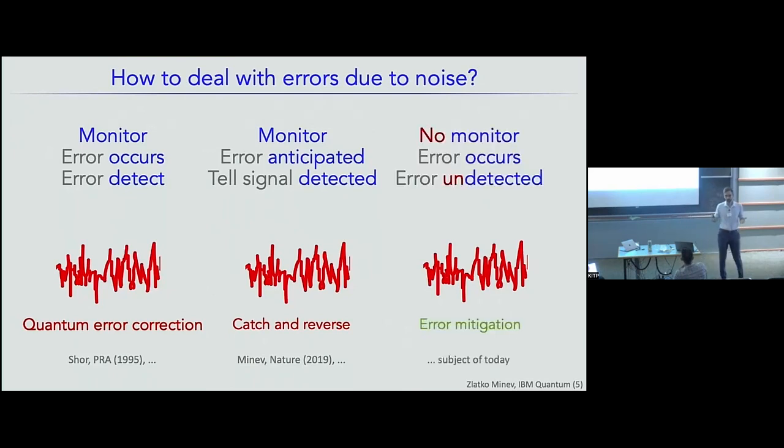Perhaps the second way to think about it is that you could monitor your system. Coming back to what Michael just referred to, this experiment, you could try to, if you have the right setup, anticipate the errors before they even have a chance to manifest and intervene and prevent the errors from ever occurring. This is also a new idea, but it's also very difficult to do in experiments at the moment. And the third option is to not monitor the system, not detect the errors, and still try to do something. And that's where a lot of our NISQ systems, or noisy intermediate-scale systems, are at the moment. And broadly, this is the field of error mitigation in which there's a tremendous amount of work at the moment, and the focus of today's talk.